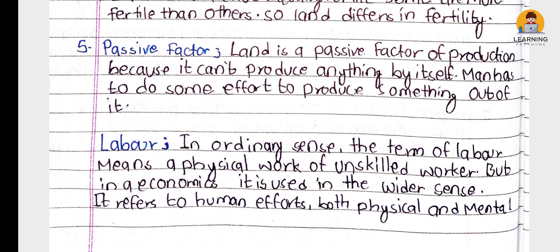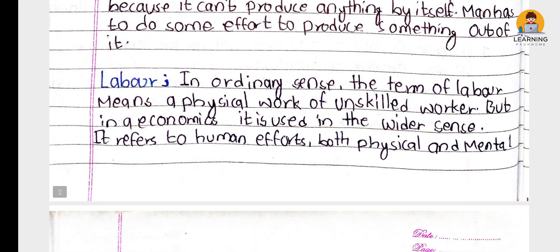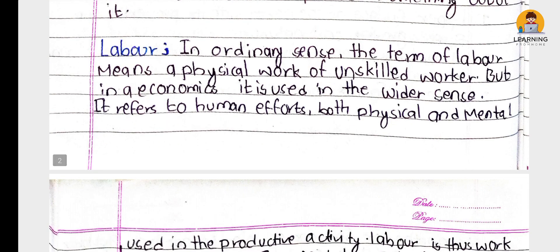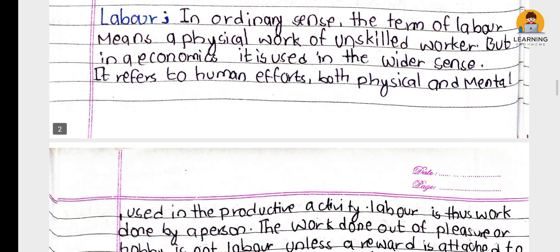The next factor of production is labor. Generally, in ordinary sense, the term labor means the physical work of unskilled workers, but in economics it is used in a wider sense — it refers to both physical and mental human effort used in productive activity.